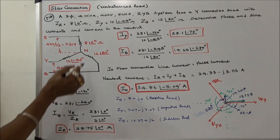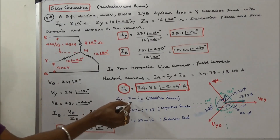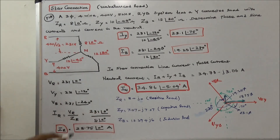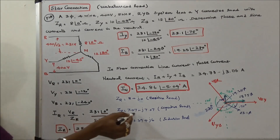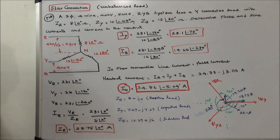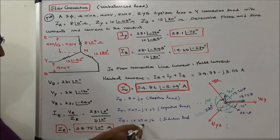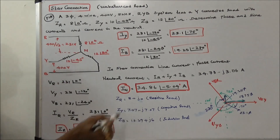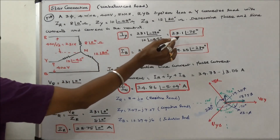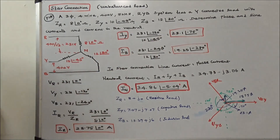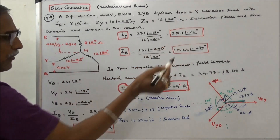In the R phase the load is resistive: 8 plus J0. In the Y phase the load is capacitive: 7.07 minus J7.07. In the B phase the load is inductive: 10.39 plus J6. Similarly, IY is equal to 23.1 angle minus 75 degrees, and IB is equal to 19.25 angle minus 270 degrees.